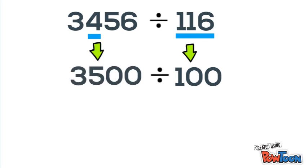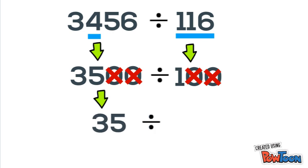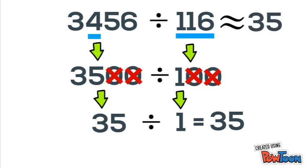Now we can cross out two zeros in our divisor and dividend, which leaves us with 35 divided by 1, which gives us 35. So 3456 divided by 116 is approximately close to 35.